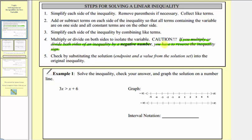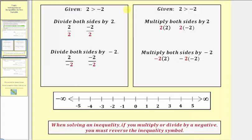Let's take a look at why we have to do this. If we start with the true inequality two is greater than negative two, let's see what happens when we multiply and divide both sides by a positive two and a negative two. Let's first divide both sides by positive two.